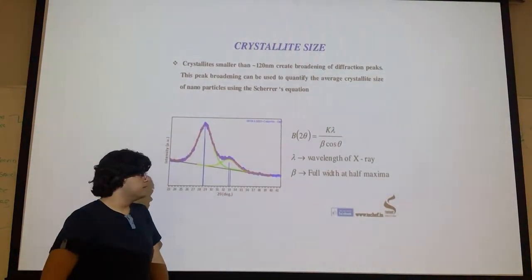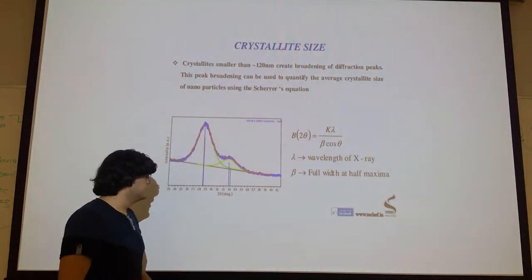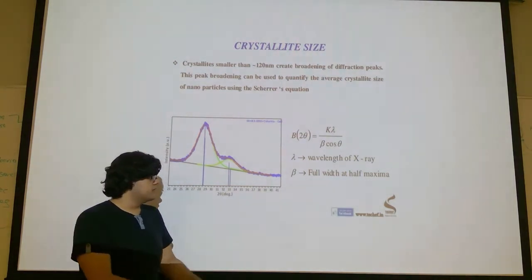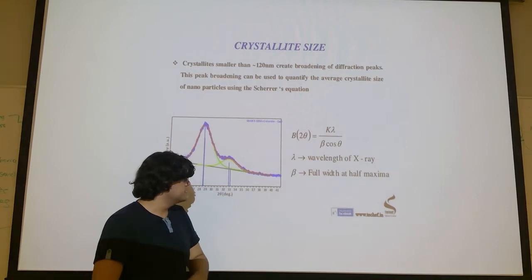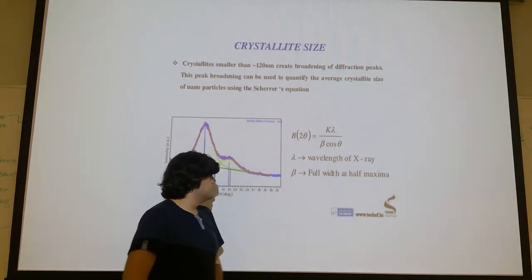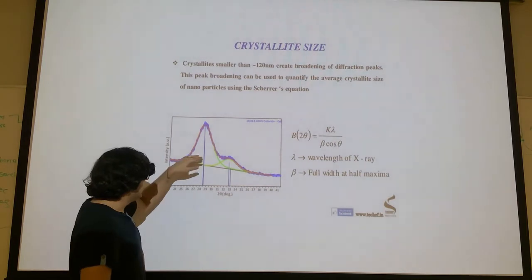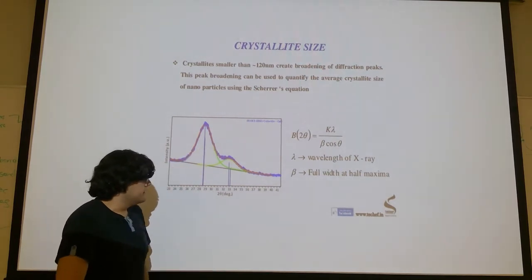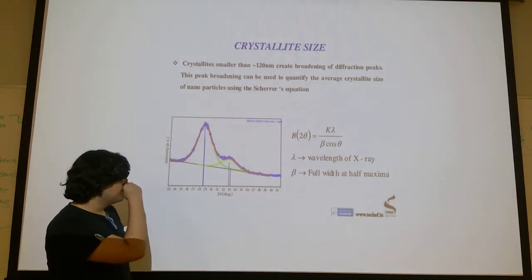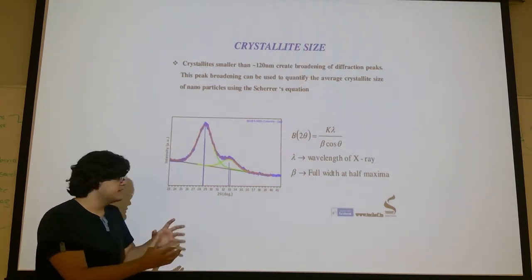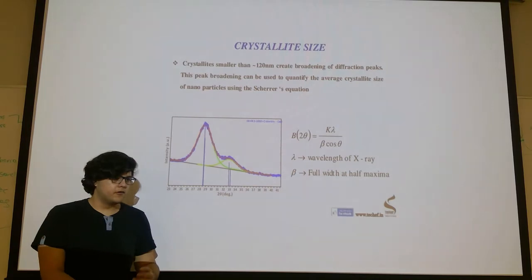One of the reasons for peak broadening of intensity peaks is the size of the crystallites. This happens at very small crystallite sizes, and it is represented by Scherrer's equation. This is basically the width of the peak at half maximum. And the equation says that it is inversely proportional to the wavelength of the X-ray and the size of the crystallite, which says that the bigger the crystallite the smaller the width, the more it approaches ideal.